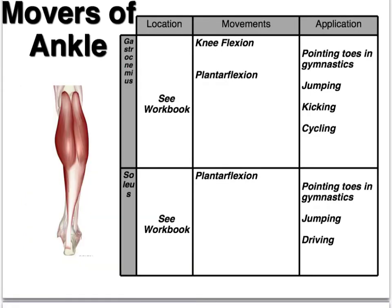The prime movers of the ankle are the gastrocnemius. The movements for that are knee flexion and plantar flexion. Plantar flexion — just to remind you — is when you point your toes, or you can remember it by thinking that you plant your feet into the ground. Your soleus muscle, which lies underneath the gastrocnemius, is also responsible for plantar flexion.